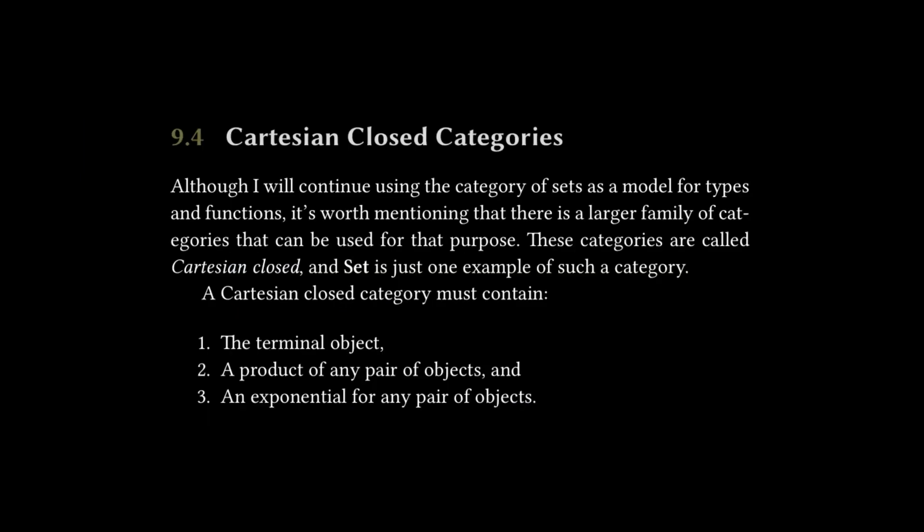This takes us to the fourth subsection of chapter nine called Cartesian Closed Categories. And all we're going to do is highlight sort of the three bullet point list of what defines a Cartesian category. So the text reads, although I will continue using the category of sets as a model for types and functions, it's worth mentioning that there is a larger family of categories that can be used for that purpose. These categories are called Cartesian closed and set is just one example of such a category.